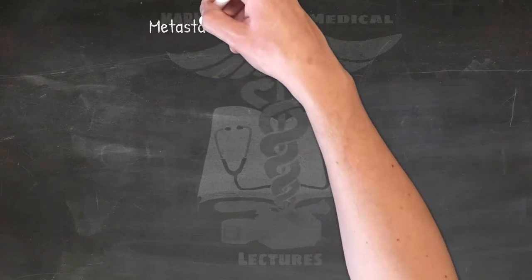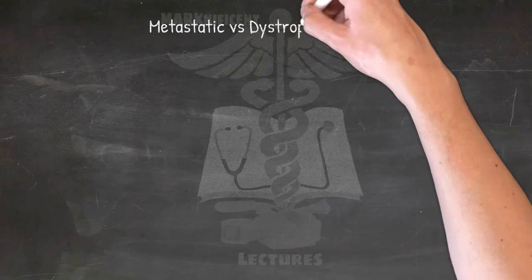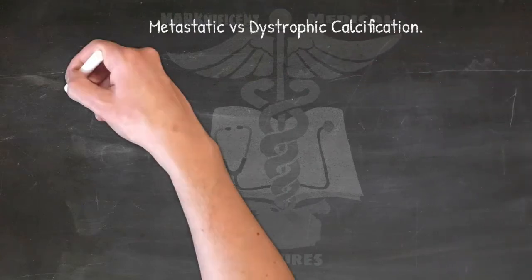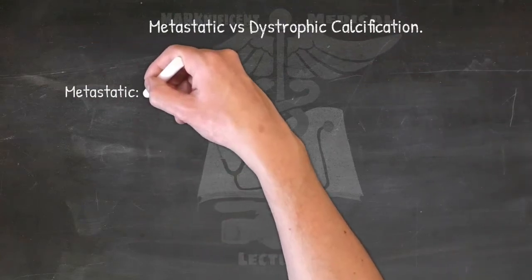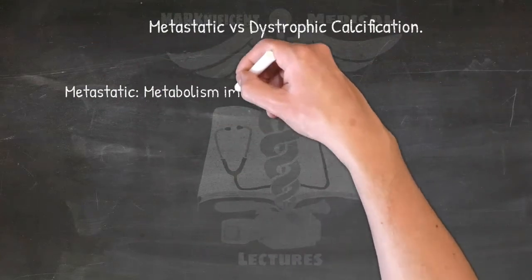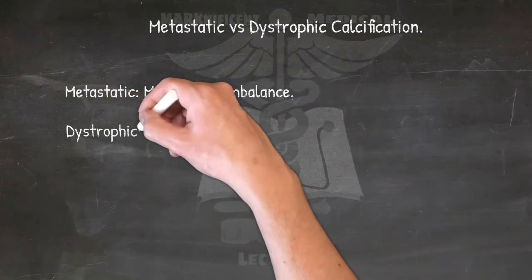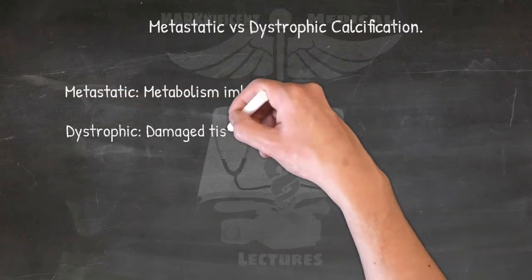Metastatic versus dystrophic calcification: Metastatic — metabolism imbalance. Dystrophic — damaged tissue.